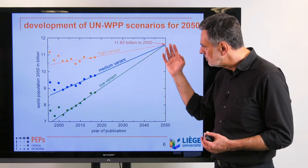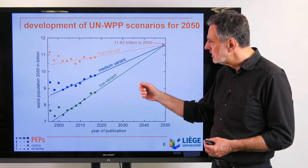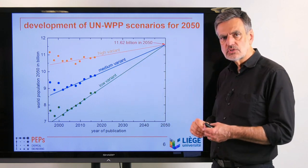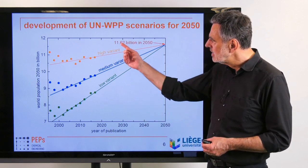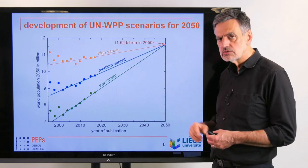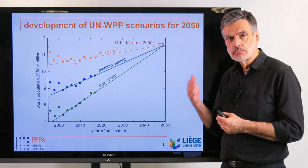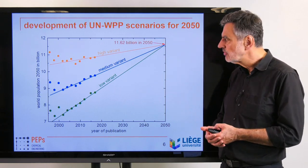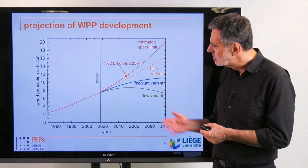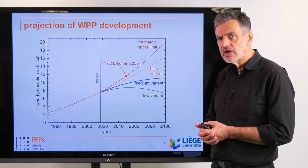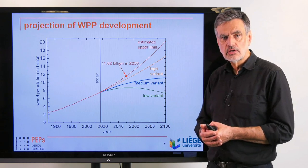I looked at the data for 2050 and plotted the values for 2050 — these three values — related to when the data was published. The United Nations updates them every two years roughly, shown here between 1996 and the 2017 version. One sees that from publication to publication, for the low and medium variant, the values have always been increasing.